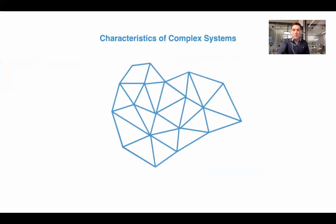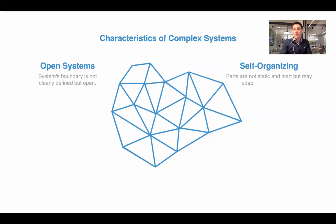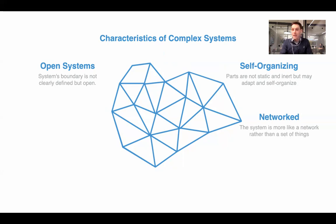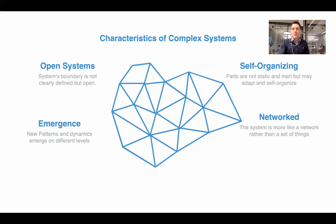The characteristics of complex systems include being open — more open than closed, with a system boundary that is not clearly defined. This is different from a chair, a simpler system that's well-defined and well-bounded. A city, by contrast, is an open system. Complex systems are also self-organizing: their parts are not static and inert, but may adapt and self-organize over time. Traffic jams are a good example of emergent, self-organizing patterns. Additionally, the system is more like a network rather than a set of separate things — an Internet of Things platform, for instance, is ultimately a network rather than individual separate parts.